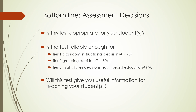Is the test reliable enough for Tier 1 classroom instructional decisions of .70? Certainly the QRI in every aspect meets and exceeds that. Is the test reliable enough for Tier 2 grouping decisions — that is, help given outside of the classroom? You'd want to see .80; again, it meets that. Is it reliable enough for Tier 3 high-stakes decisions, for example placement in special education, of .90? Certainly some aspects of the QRI meet that also, although you would never use just one test for placement in special education. It can be a very valuable adjunct to the IEP process.